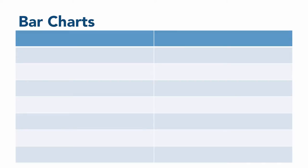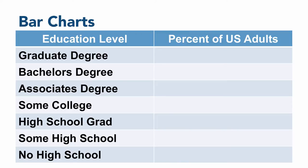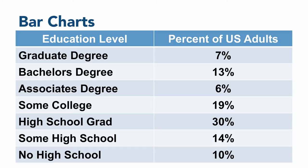Most statistical programs are able to make bar charts from raw data, but if you're going to use a spreadsheet or make one by hand, then you need to create the frequency table first. I'll create an empty table with two columns, labeled education level and percent of U.S. adults. We'll fill in the education levels on the left, going from no high school at the bottom to graduate degree at the top, then fill in the percent of U.S. adults who finished at each level. But we've already seen frequency distribution tables like this — our goal here is to create a bar chart.